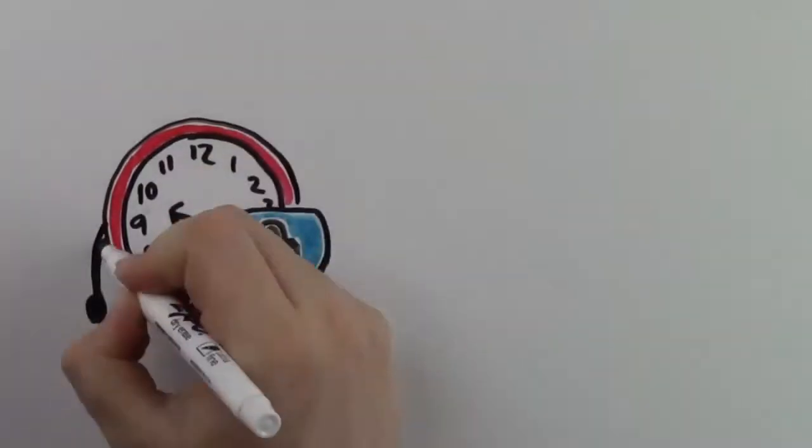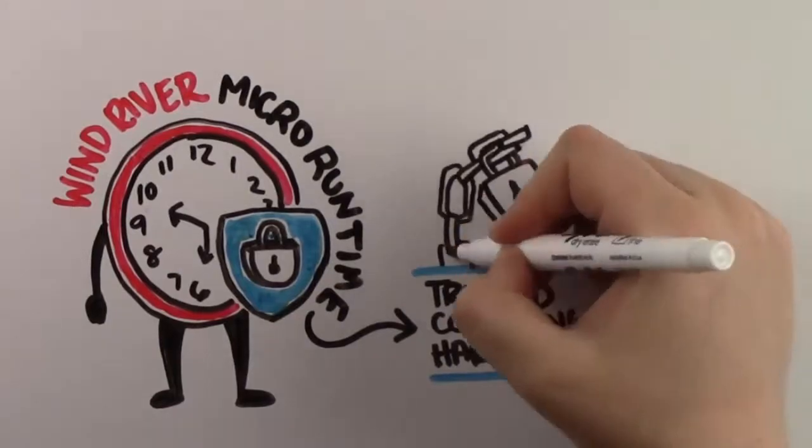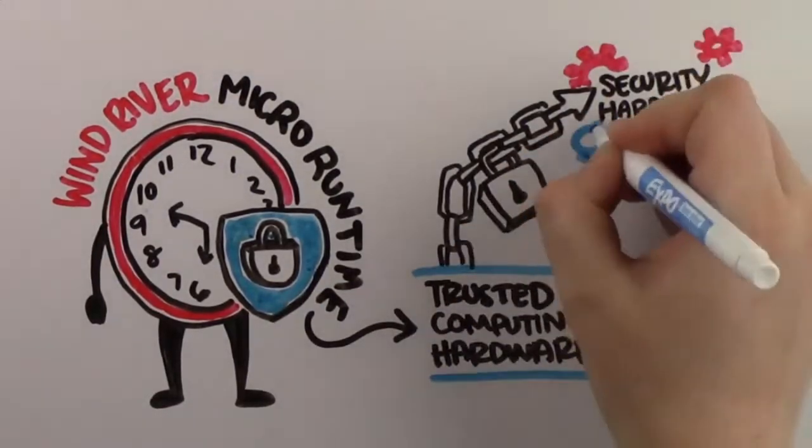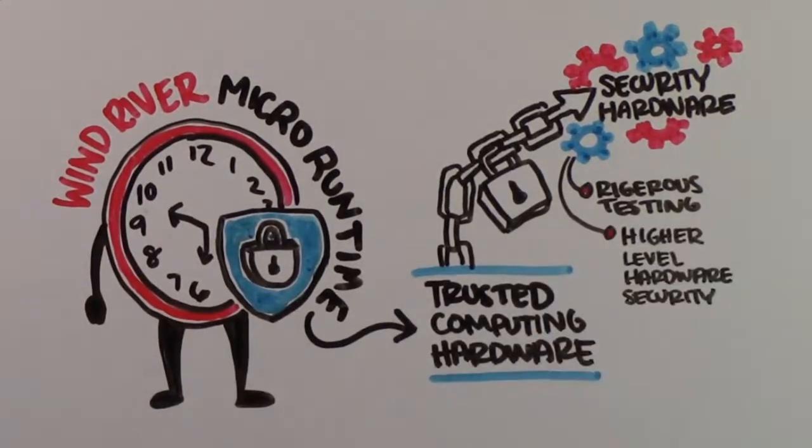Wind River Micro Runtime is a security-hardened runtime with trusted computing hardware. This means that there is a tie-in with security hardware, which has been subjected to rigorous security testing and is integrated with higher-level hardware security.